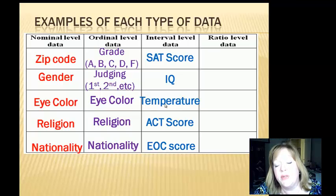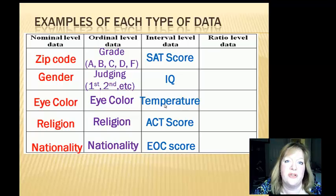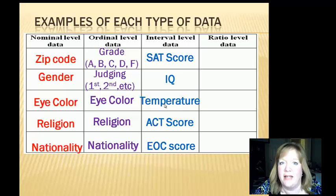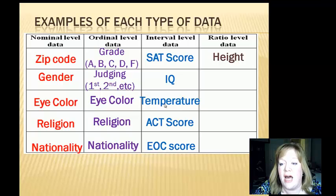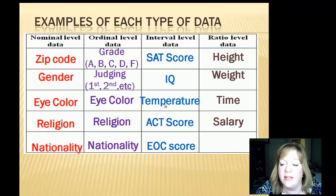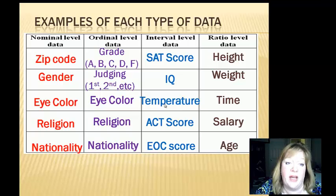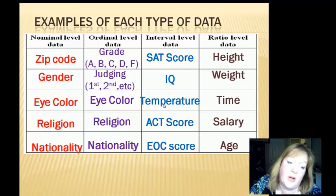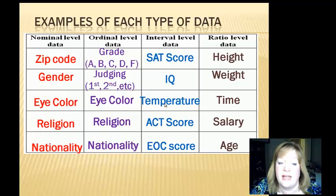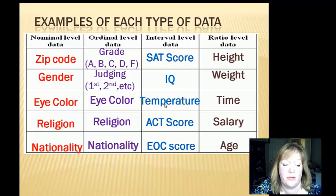Ratio level data includes your height, your weight, the time it takes to do something, your salary, and your age. Those give you examples of each level. The only ones we made an error on were eye color, religion, and nationality listed under ordinal — those cannot be ordinal. Hopefully you left those blank.